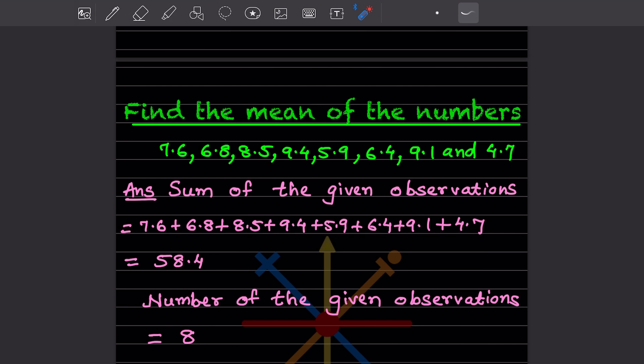Then you will see how many observations are here. How many numbers are here? 1, 2, 3, 4, 5, 6, 7, and 8. So the number of the given observations is 8.